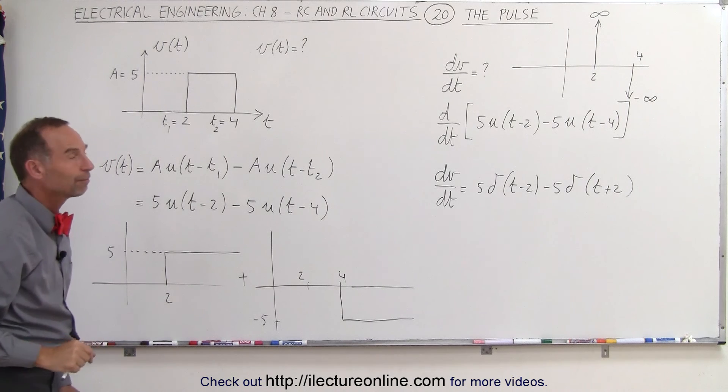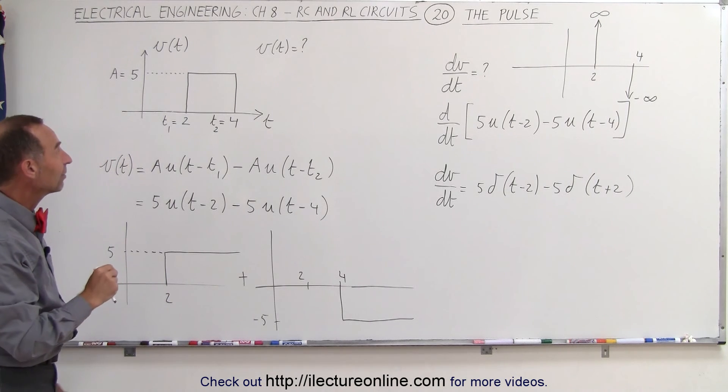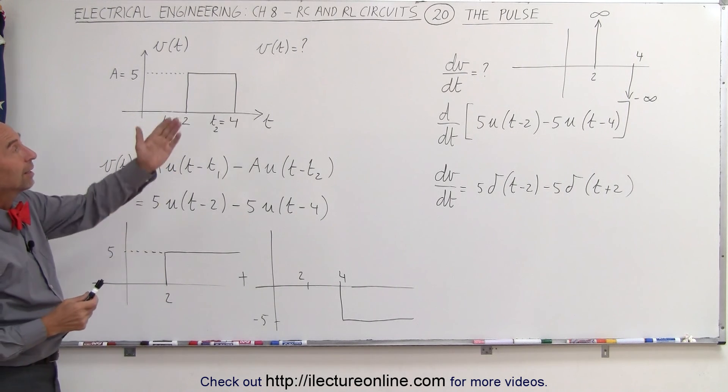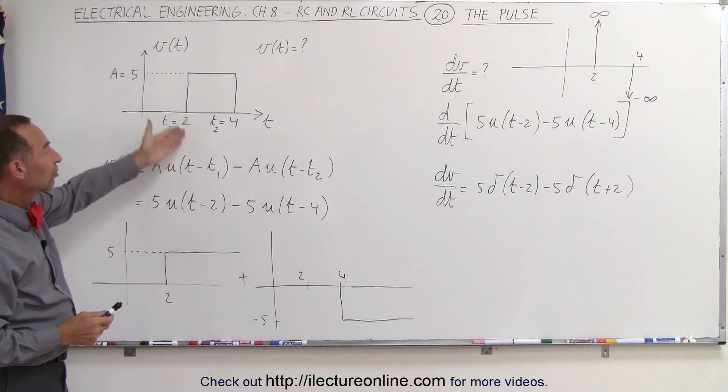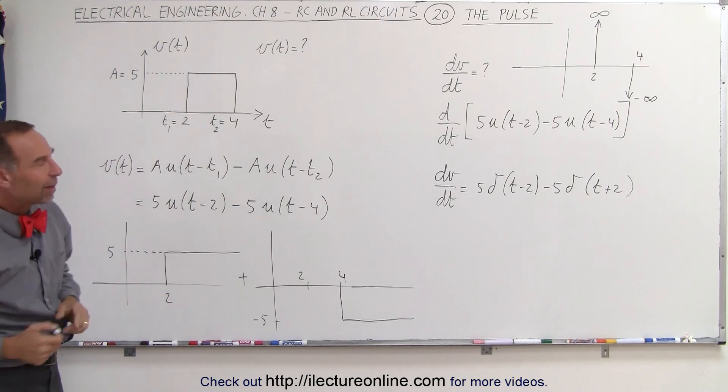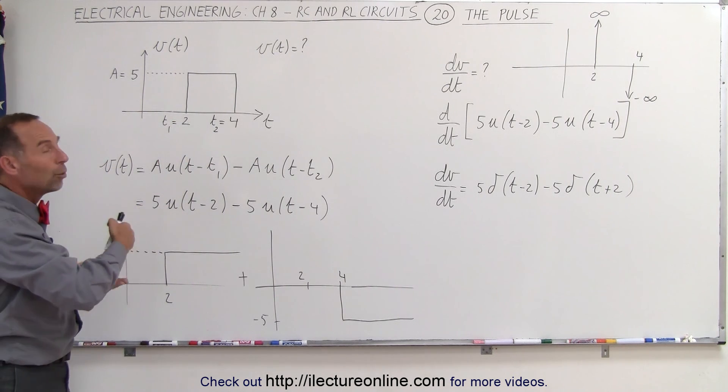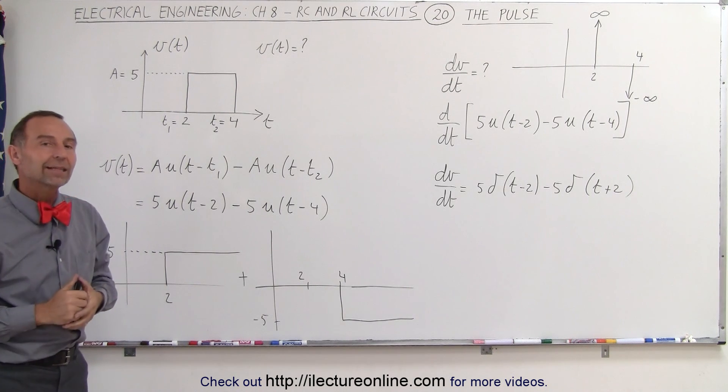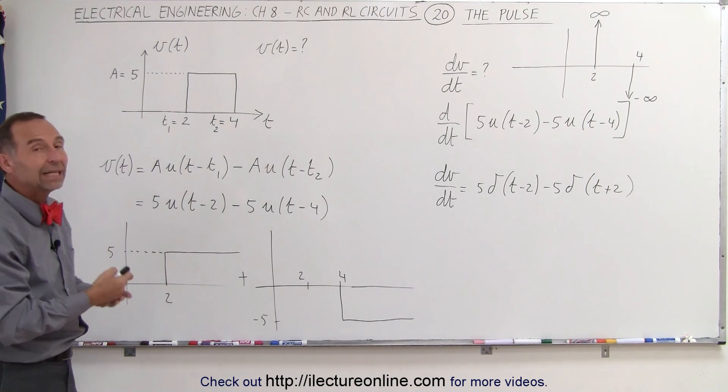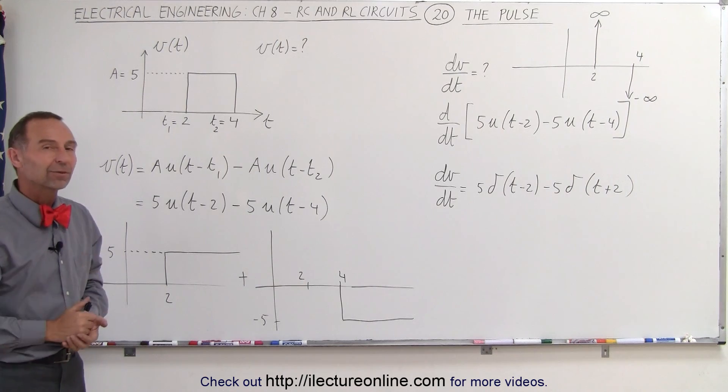And that's how we now understand that using the impulse, the step function, and the ramp function—we haven't seen the example of that yet—we can represent almost any input voltage like that, or input current, to any digital circuit. And that's how it's done.